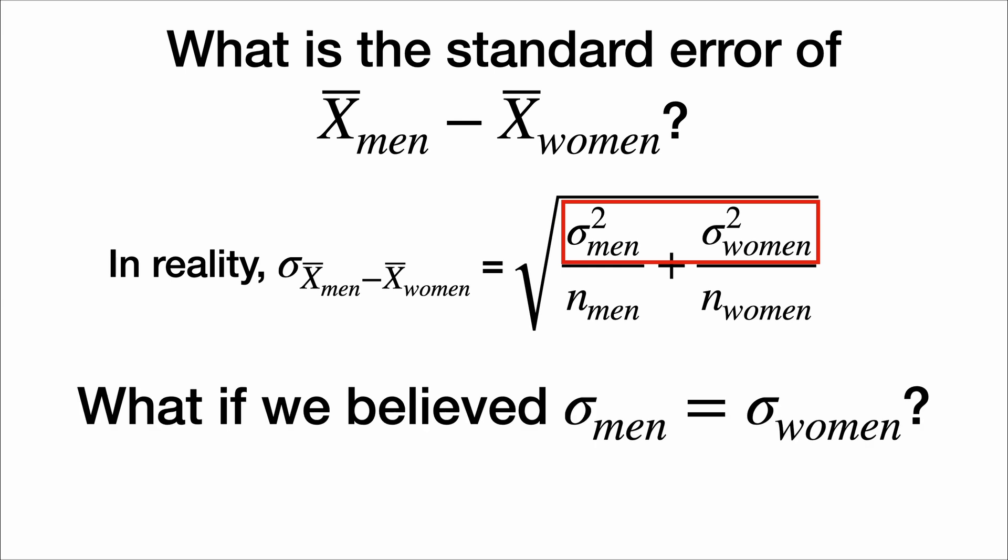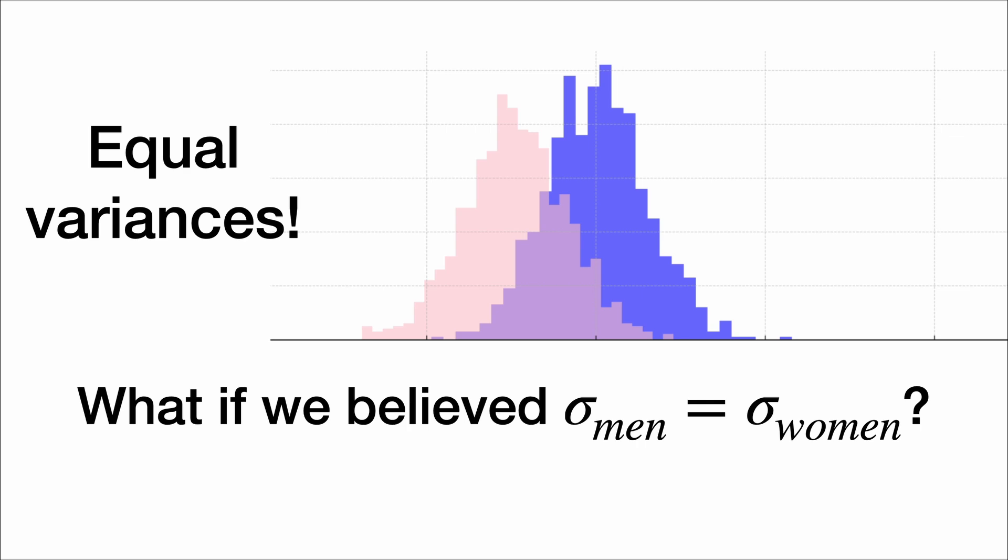Well, what if we believed that the standard deviation of each group was the same? Here's an example of some data where the standard deviation for men and women are the same. Even though they have different means, the variance, the standard deviation, is the same.